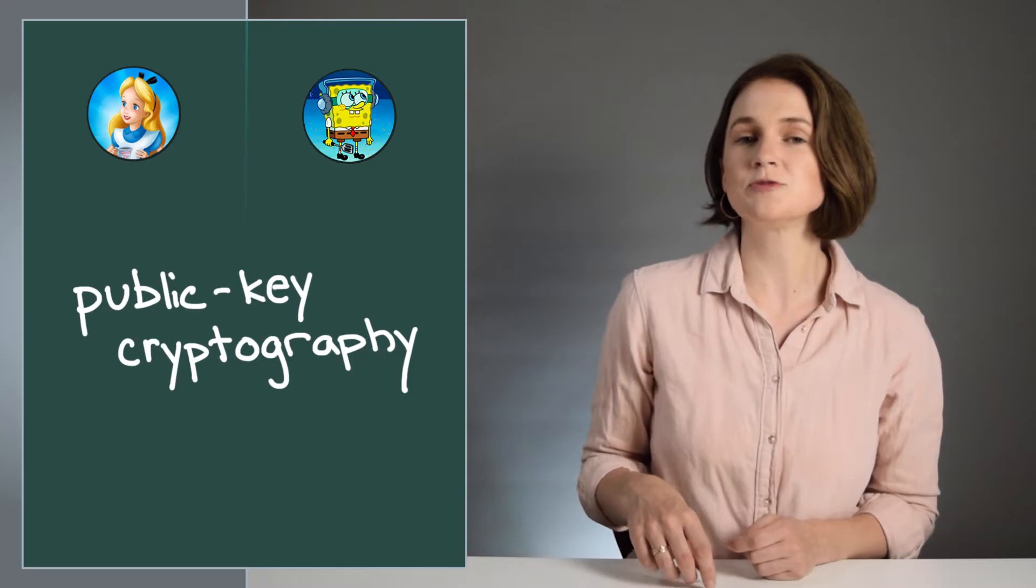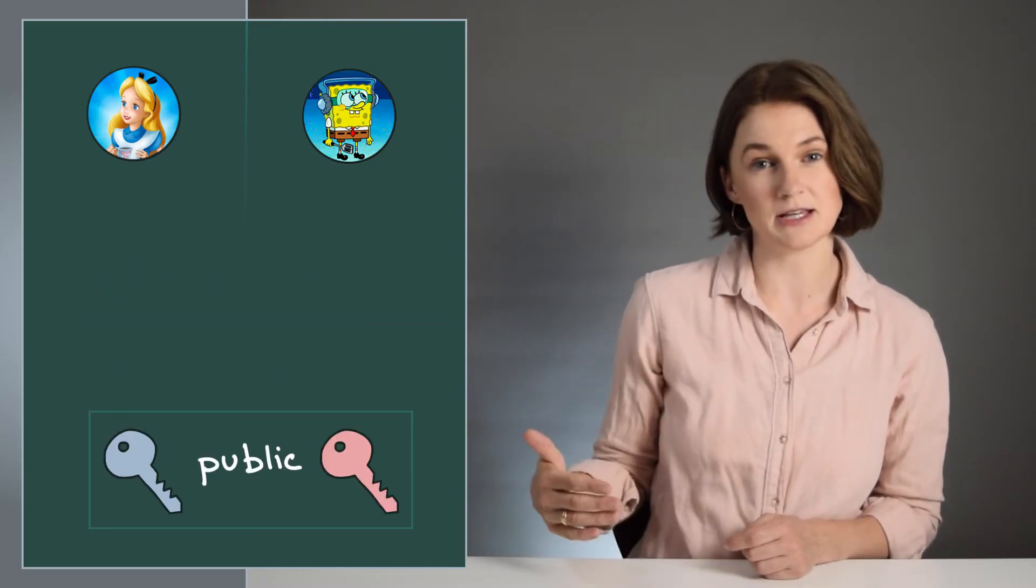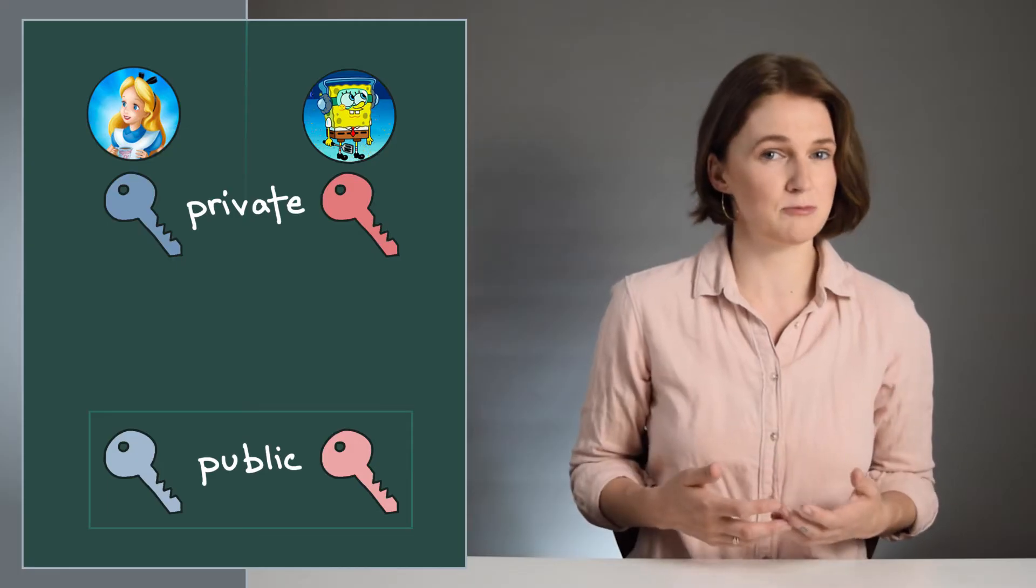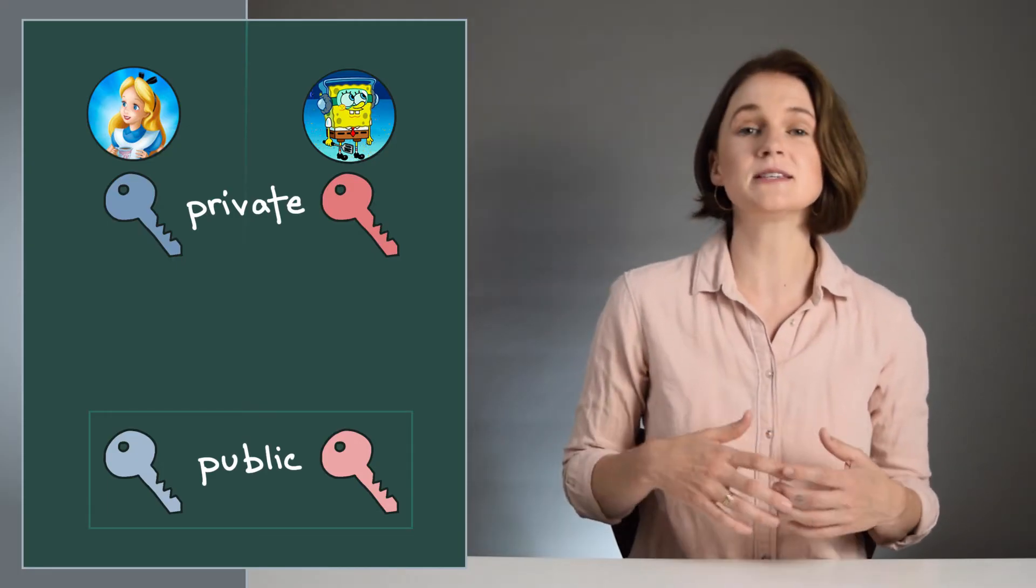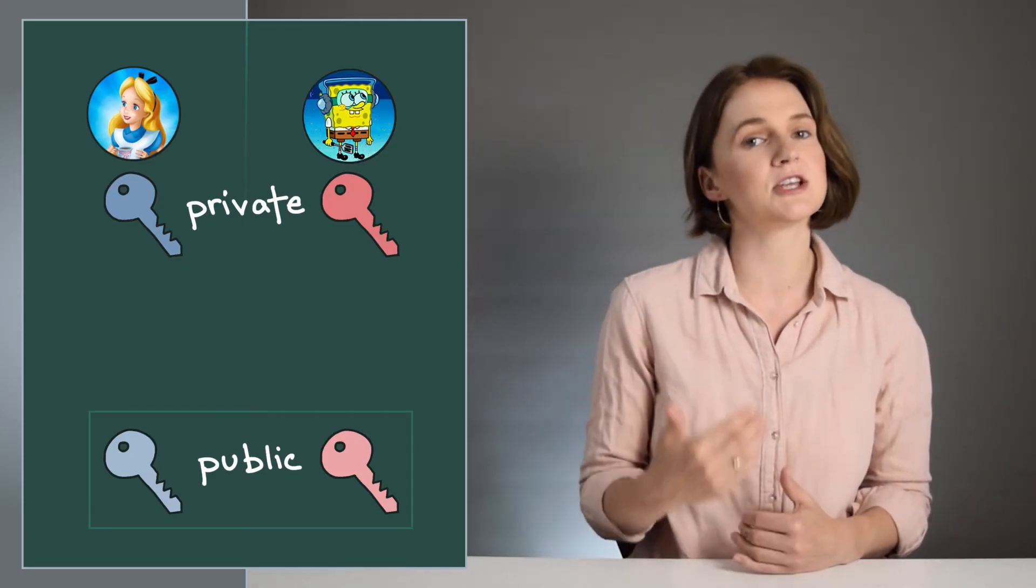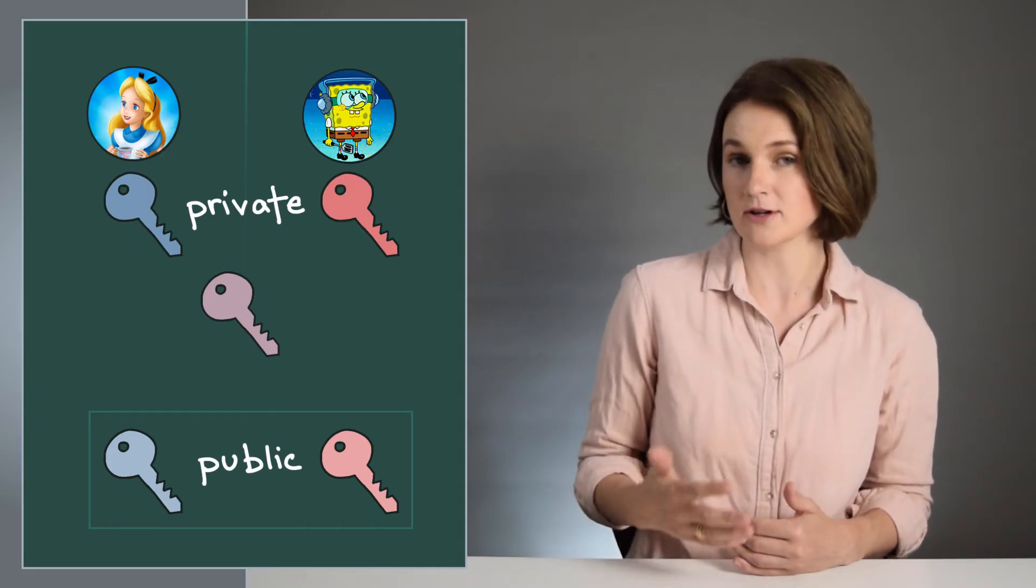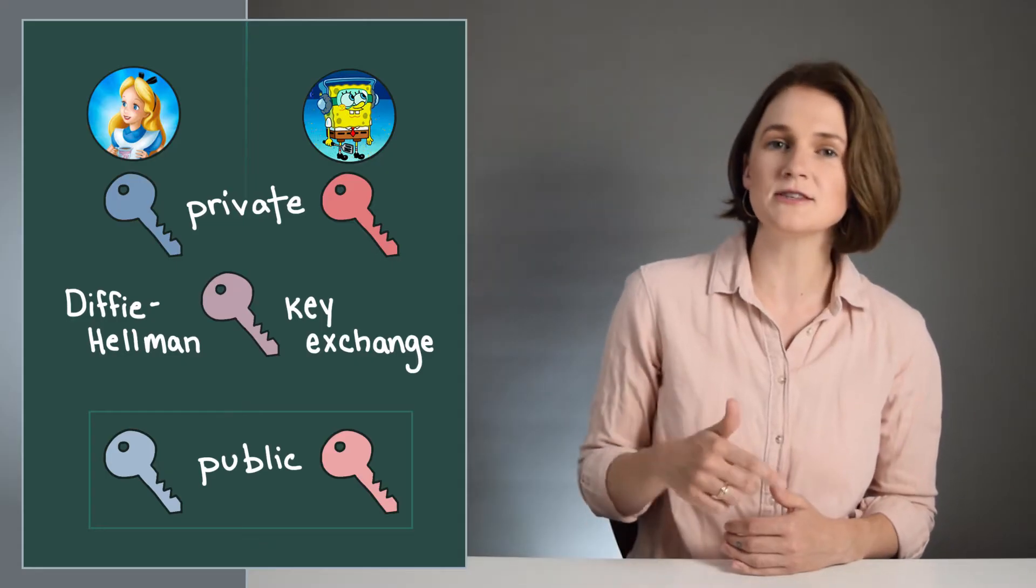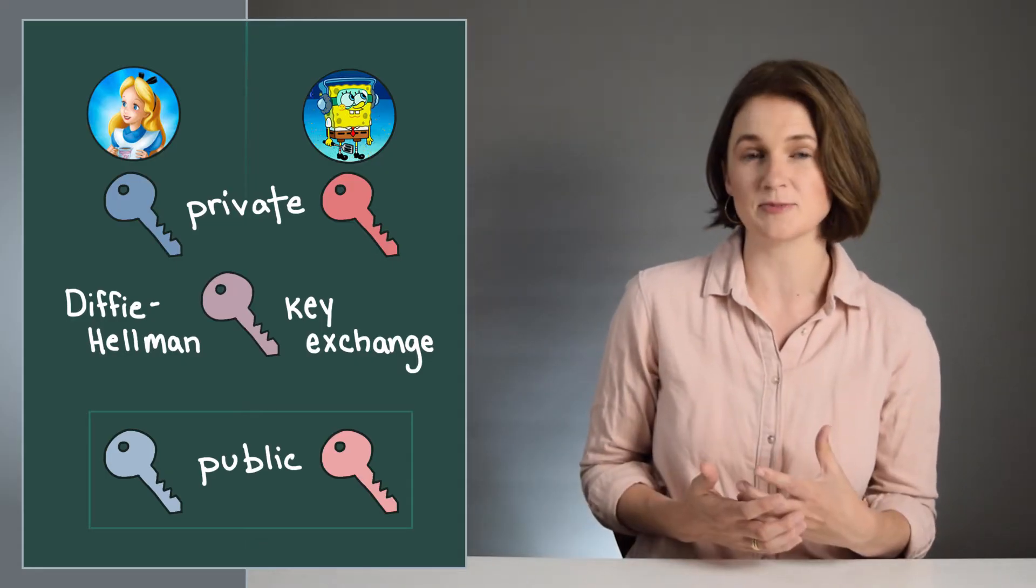There are various solutions to this problem, often involving public key cryptography, which means that each party has a public key, which they share publicly, and a private key, which they keep, well, private. These can be combined to produce a shared secret key using, for example, something called a Diffie-Hellman key exchange.